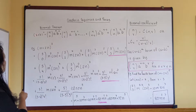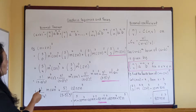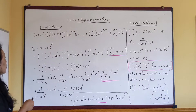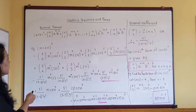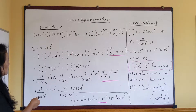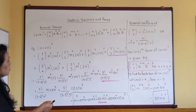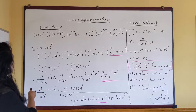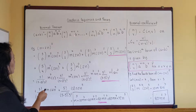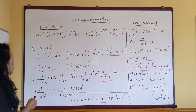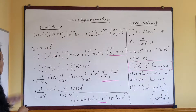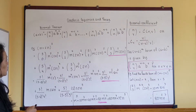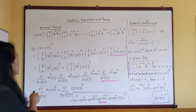The first term 'a' runs from a to the n down to a to the zero. My first term is m and n is five, so it goes: m to the fifth, m to the fourth, m to the third, m to the second, m to the first, m to the zero. The second term 'b' starts from b to the zero up to b to the n. My second term is 2n, so: (2n)^0, (2n)^1, (2n)^2, (2n)^3, (2n)^4, (2n)^5.